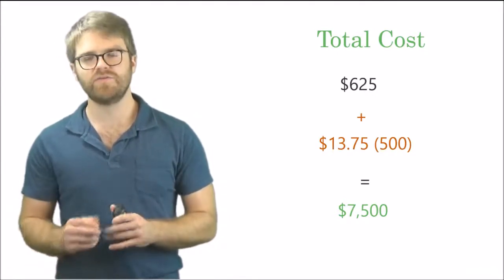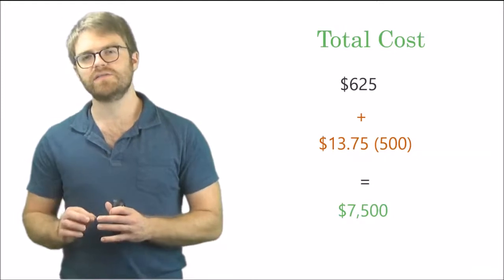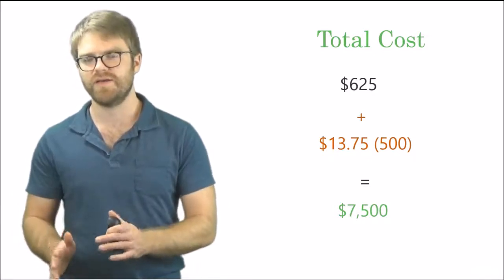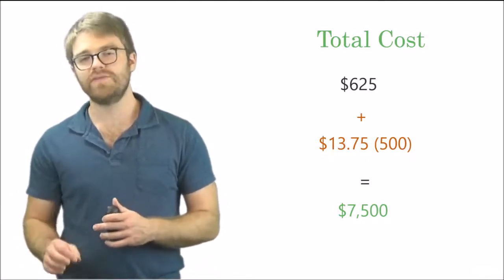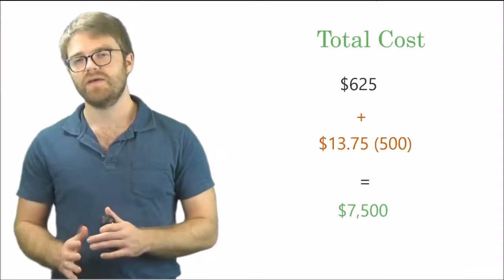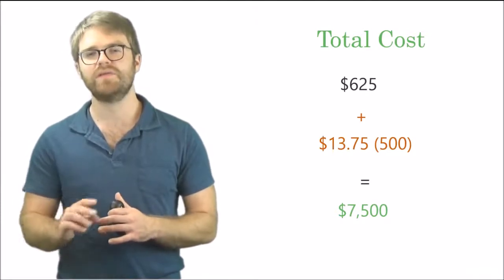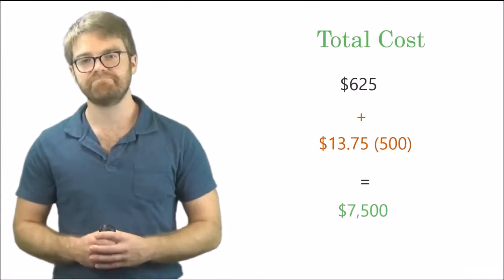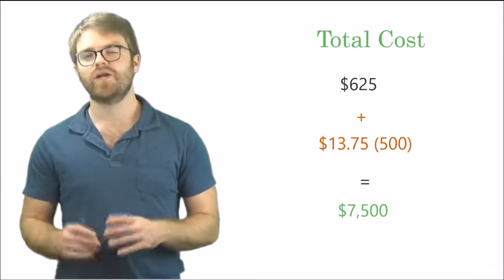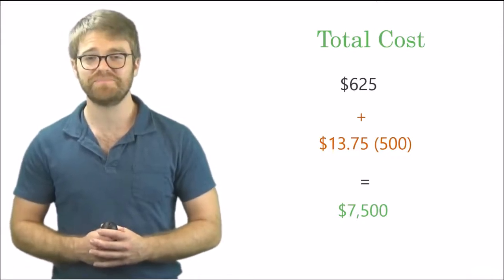To recap: use the high-low method to get your variable rate, then take your highest cost and subtract the variable rate times the output to get your fixed costs, then plug everything into the total cost formula. Rewind this video and take notes if you haven't already, writing down each formula and the numbers. That's it for the high-low method — you have to know it for your tests. We'll practice a lot of test questions on it. Thanks for watching — see you in the next video.